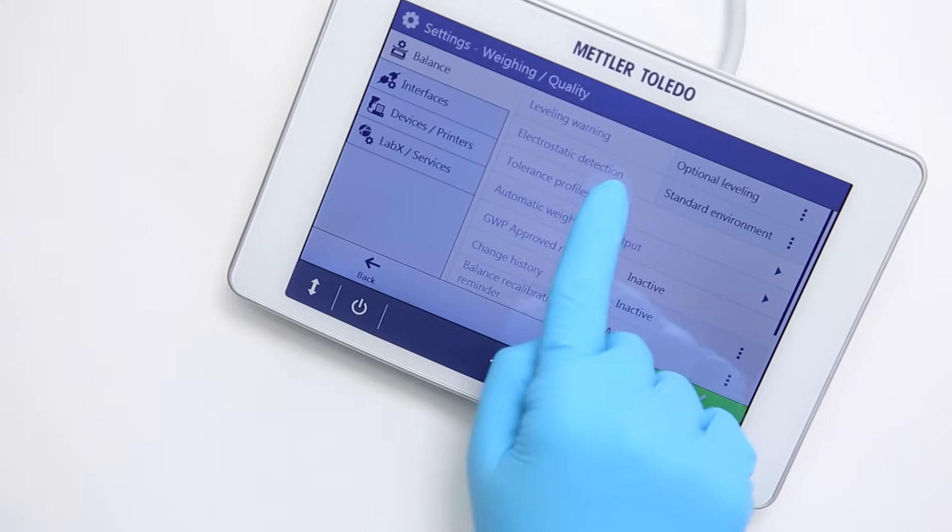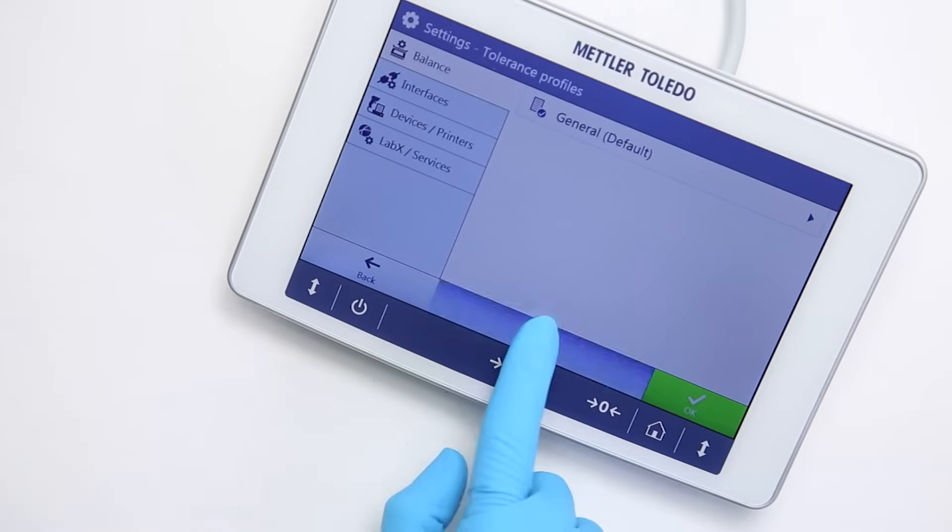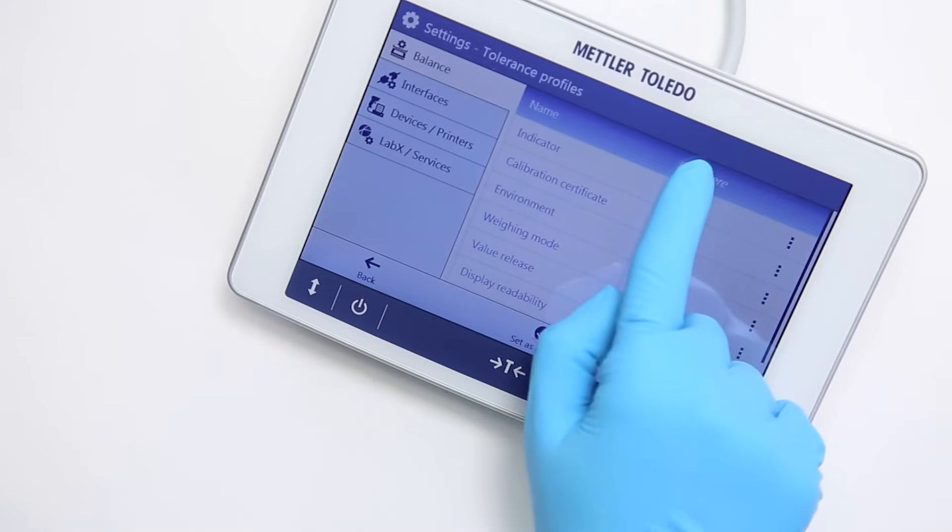The third quality assurance feature are the tolerance profiles. They ensure weighing tasks and results meet the defined quality, regulatory, and traceability requirements.